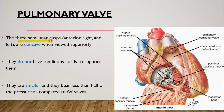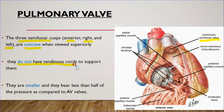The three semilunar cusps are the anterior, right, and left cusps. When viewed superiorly or from the pulmonary trunk, they appear concave; when viewed from the right ventricle, they appear convex. Importantly, the pulmonary semilunar cusps do not have tendinous cords to support them — they are only attached to the fibrous rings.